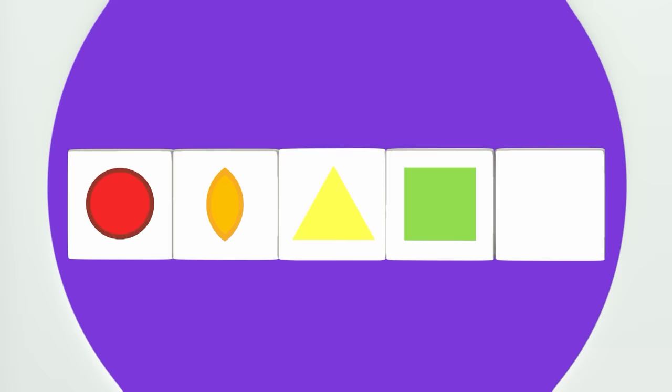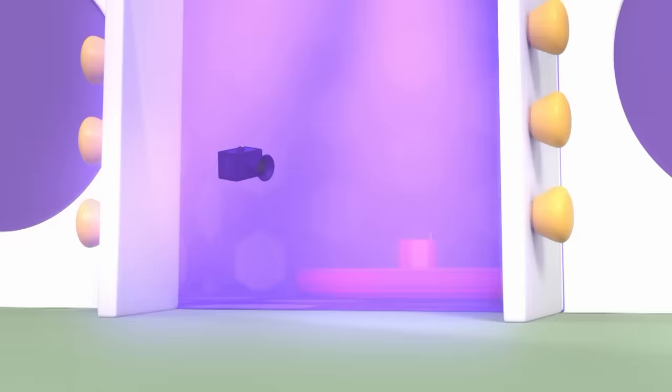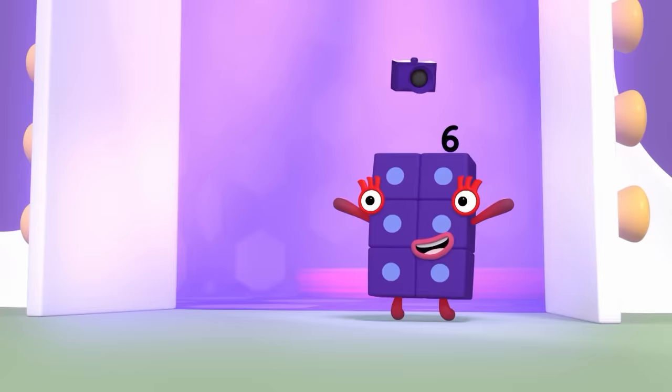A circle has one curved edge. This leaf shape has two curved edges. A triangle has three straight sides, and a square has four. So the next shape in the pattern must have five sides. A pentagon! Pattern unlocked!